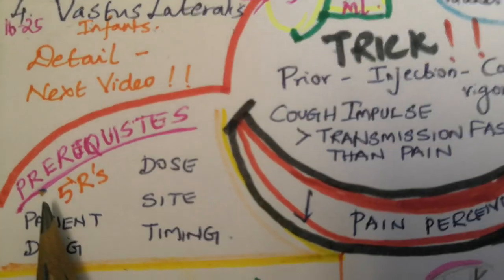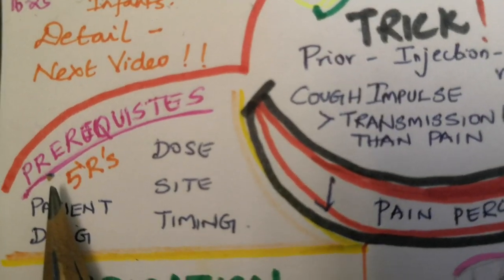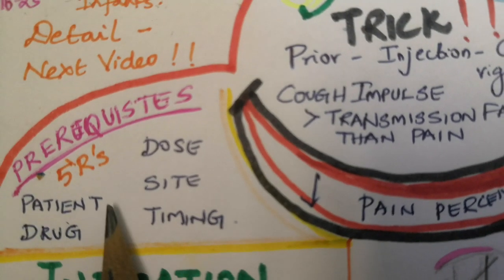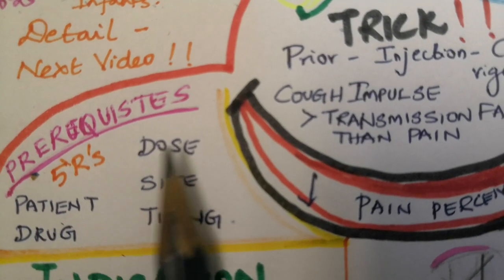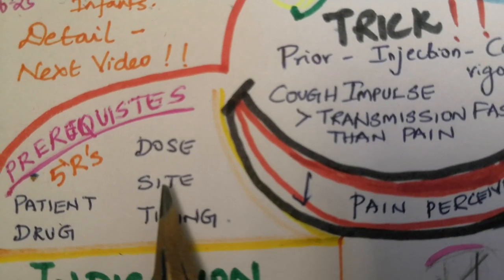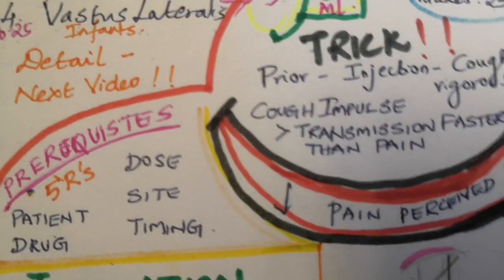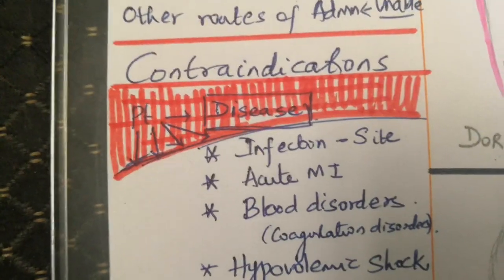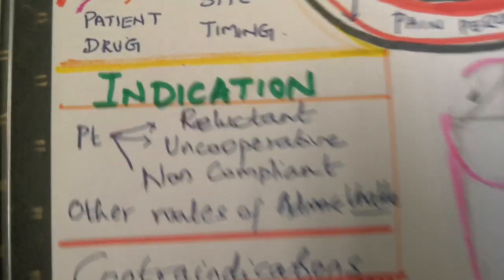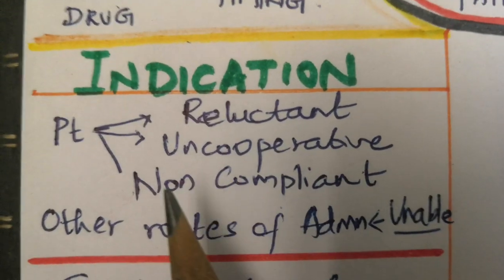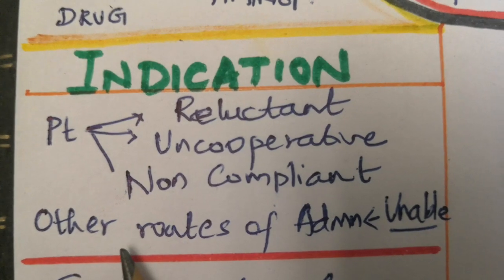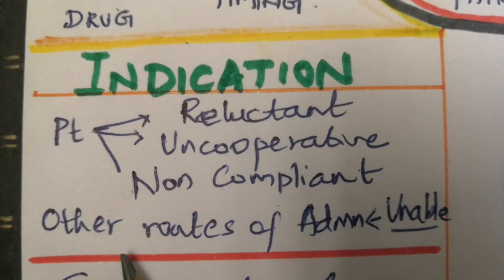The prerequisites of intramuscular injection are the 5 rights: right patient, right drug, right dose, right site, and right timing. Indications include when the patient is uncooperative, non-compliant, or when other routes of administration are not possible.